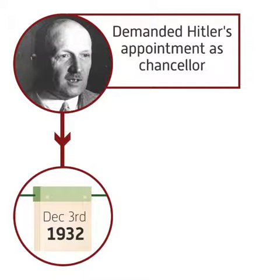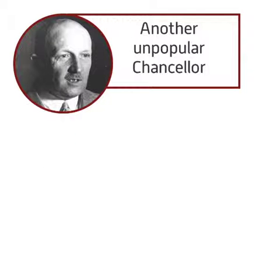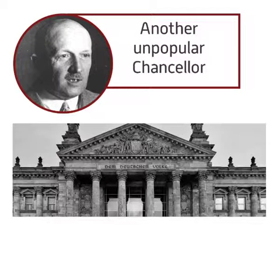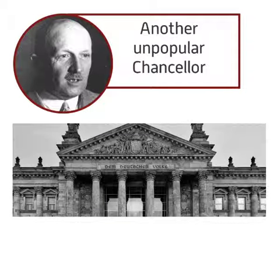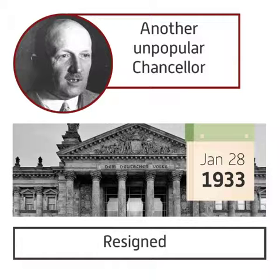Hindenburg agreed, and on the 3rd of December 1932, von Schleicher was made Chancellor. Von Schleicher was another unpopular Chancellor. By late January 1933, he was struggling to maintain a united and functional Reichstag. On the 28th of January 1933, he resigned.